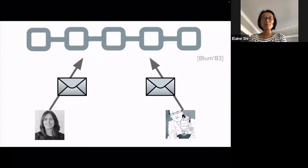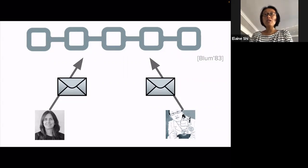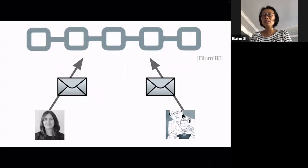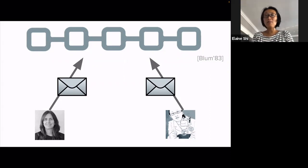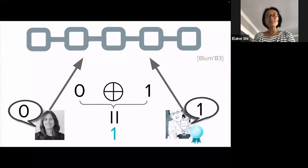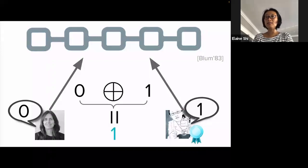Coin toss was first proposed in Blum's groundbreaking work in 1983. In this example, we are using a blockchain as a public bulletin board. Shafi and I each select a random bit and both commit to our bits. Then we open our commitments. We compute the XOR of the openings. Let's say Shafi prefers zero and I prefer one—so in this case, the XOR is one and therefore I win.